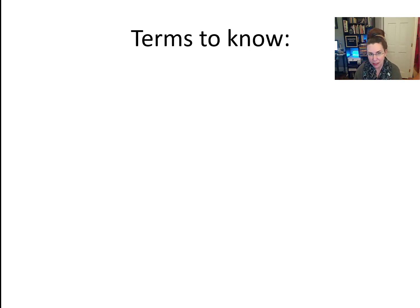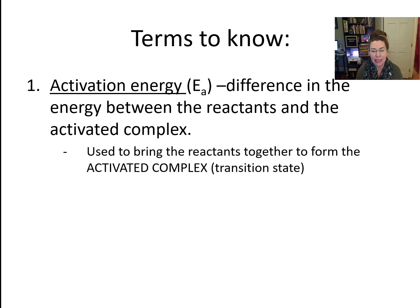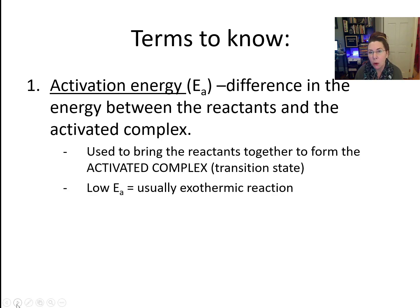Let's define a few of these terms. Activation energy is sometimes called E sub A. It is the difference in energy between where we started in the reactants and the activated complex up at the top of the hill. It's used to bring the reactants together to form that activated complex or intermediate transition state. Without sufficient activation energy, reactions will not go. All reactions, whether they are endothermic or exothermic, require a small amount of activation energy. If it's a low amount of activation energy, or E sub A, then that reaction is usually exothermic because we didn't need to put a lot in.